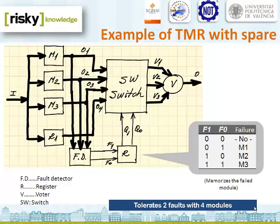These two signals indicate whether one of the modules M1, M2, or M3 is in error. With this information, the switch is able to replace the faulty module with the spare. With this configuration, this system is able to tolerate two faults with just four modules. The reliability is maintained as long as the pool of spares is not exhausted. To achieve the same in a passive approach, we would need to have five modules.